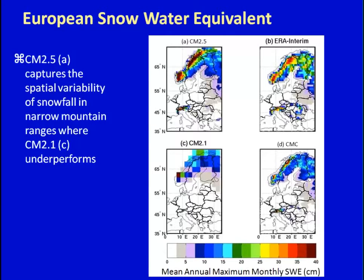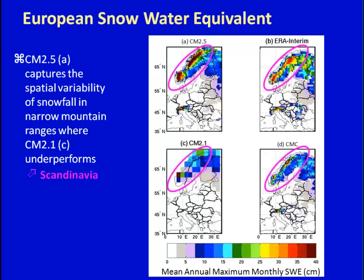For European snow water equivalent, CM2.5 captures the spatial variability of snowfall in many mountain ranges, getting the maximum signature over Scandinavia also seen in the Canadian product. ERA Interim performs better in this region, likely because the European Center developers ensured their parameterizations worked better there. CM2.5 also shows the maximum snowpack signature over the Alps. However, due to CM2.1's low resolution, these maximum signatures are lost — you lose the complete variability over the Scandinavian mountain range and don't even get snowpack over the European Alps. The high-resolution model is really needed to look at snowpack in these complex topographic regions.